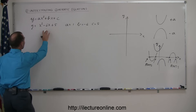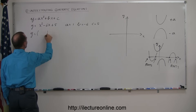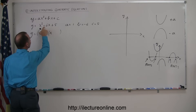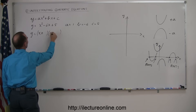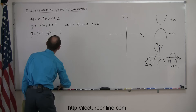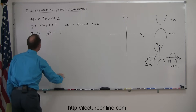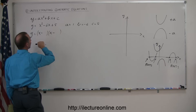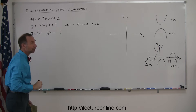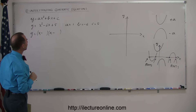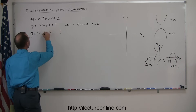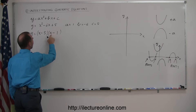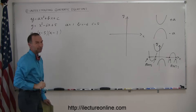This happens to be a factorable equation, so we can write this as y equal to the product of two binomials. Since there's a negative and a positive in the original, both signs must be negative. We're looking for two numbers that multiply to give 5 and add to give 6 — that's 5 and 1. So the factored form is y equals x minus 5 times x minus 1.